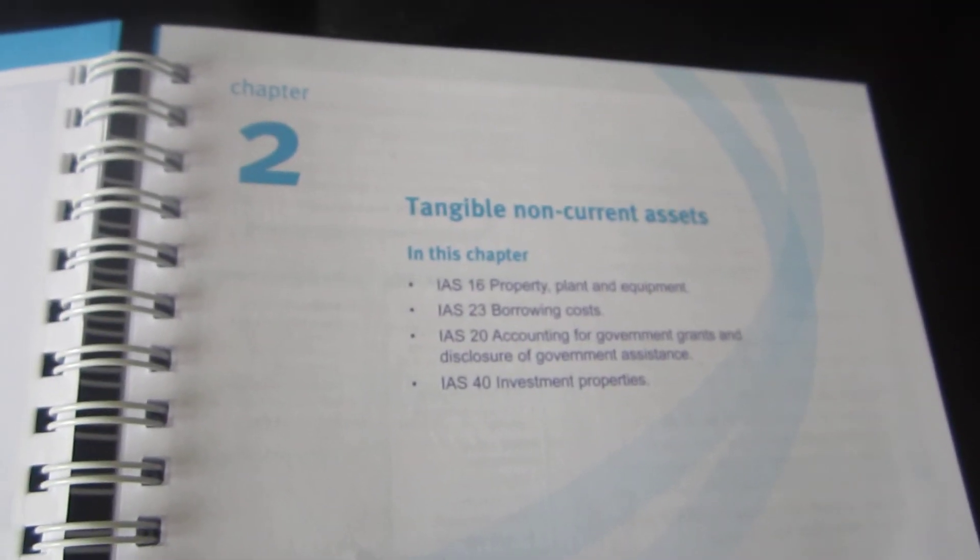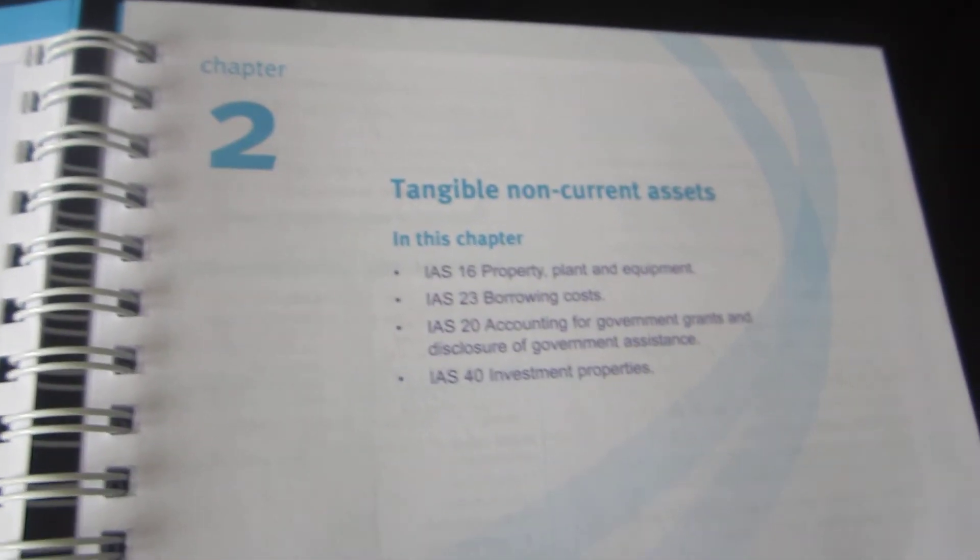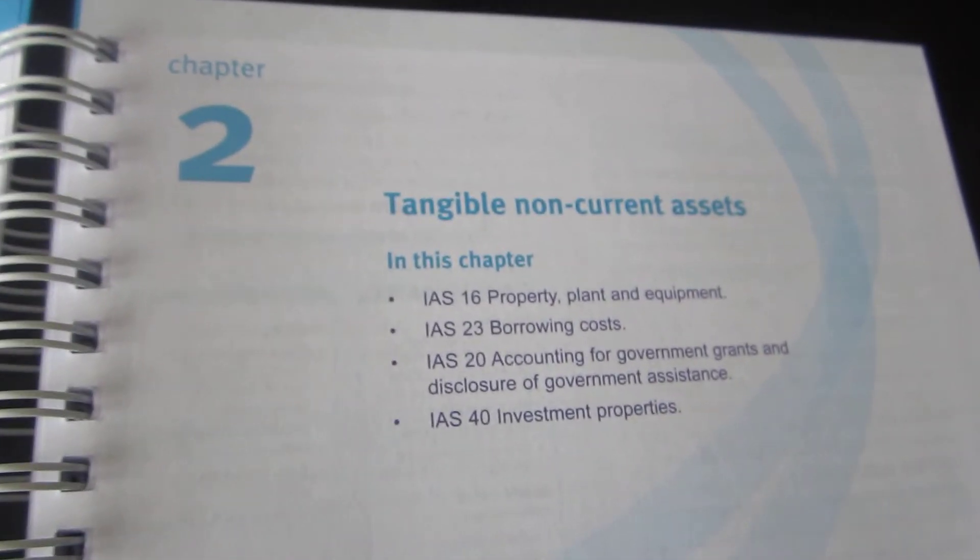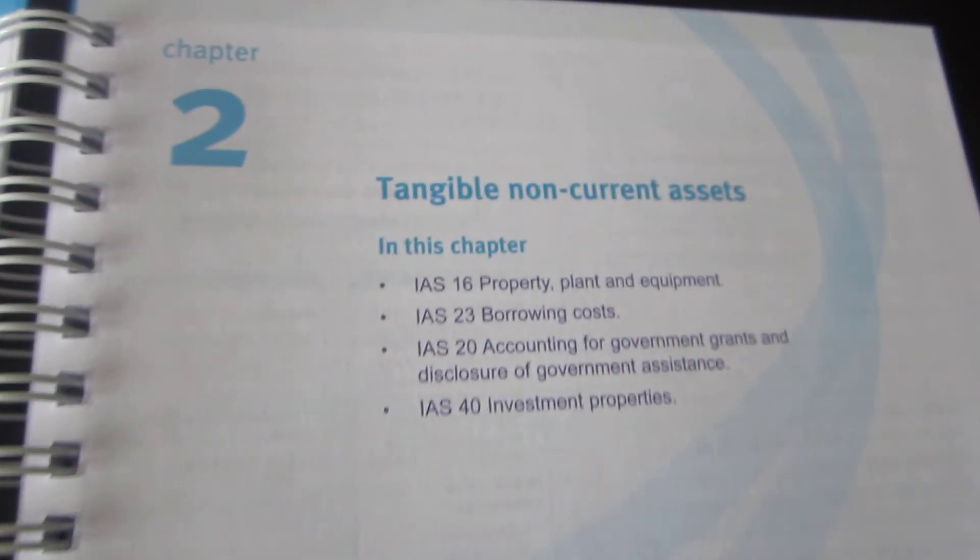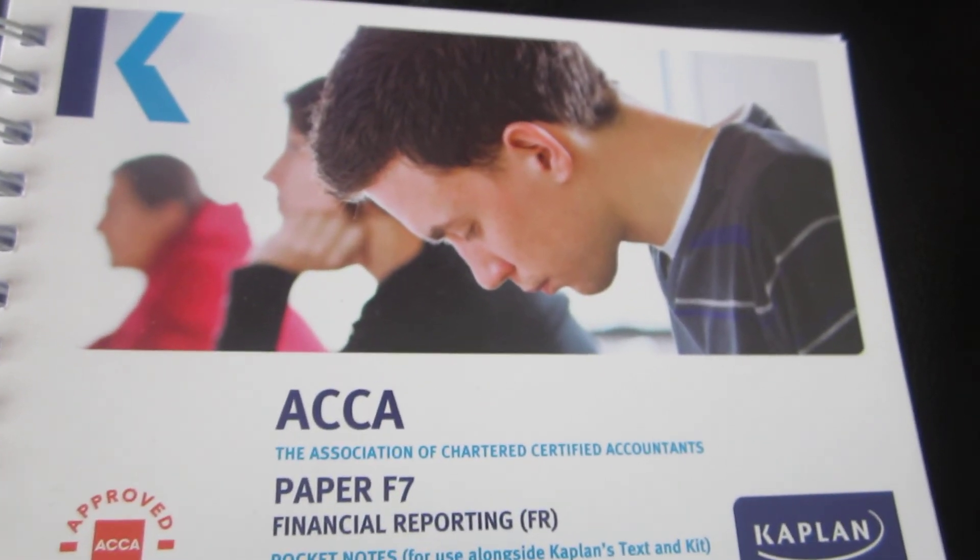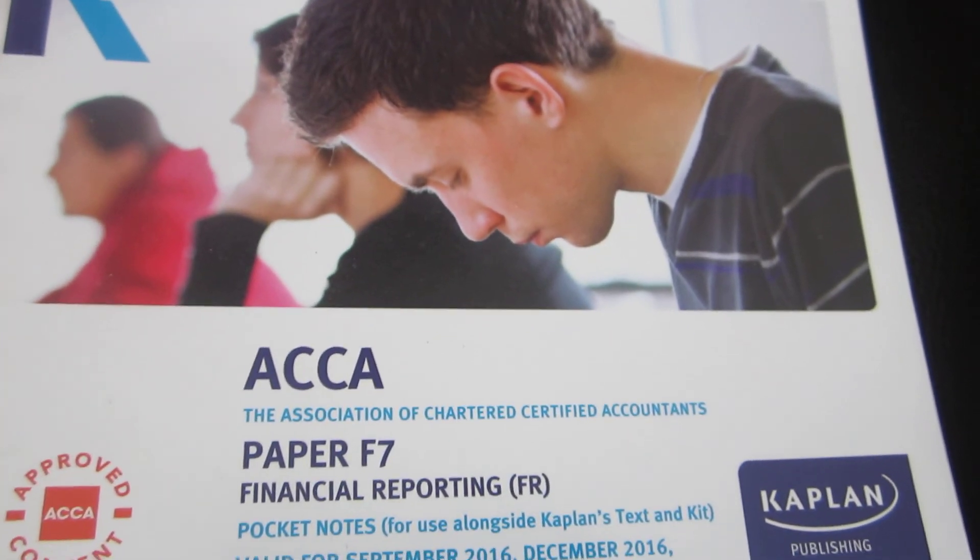Please do subscribe to our channel. Click on the like button if you enjoyed the video. But most importantly subscribe to our channel so we can bring you some great content. So there we have it. Chapter 2 is coming soon. The ACCA Paper F7 Financial Reporting. Thank you for watching.